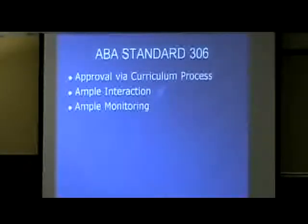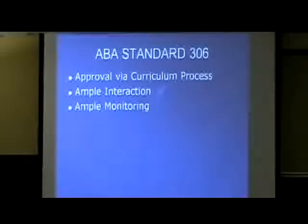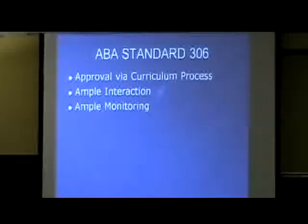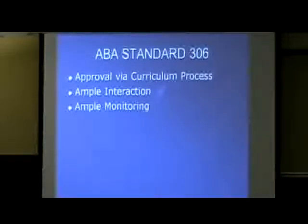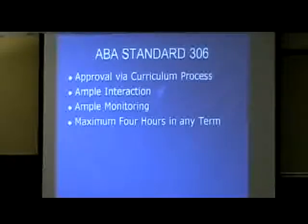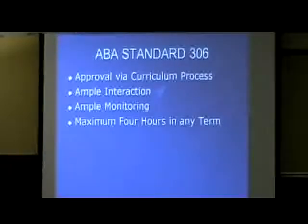Ample monitoring is also required. Almost every system — whether TWEN, Blackboard, ANGEL — has some type of monitoring within it, so it's usually very simple to know if students have been there and are participating. In our case, we require a certain number of posts each week. The ABA also says you can have a maximum of four hours of distance learning in any term, which is a very restrictive policy. That means for us, unless courses are two credits, we're usually allowing a student one class in the summer or maybe one to two classes during a semester. A maximum of 12 hours for the JD.